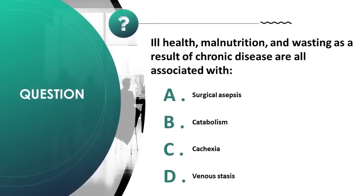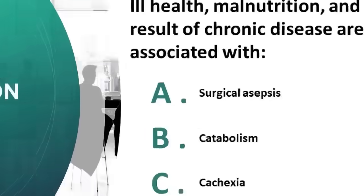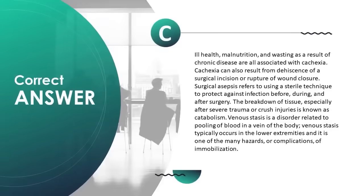Ill health, malnutrition, and wasting as a result of chronic disease are all associated with: A) surgical asepsis, B) catabolism, C) cachexia, D) venous stasis. Correct answer is C.